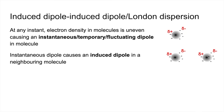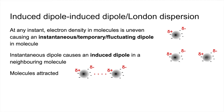If you bring in a neighboring molecule, the electron density skewed to the right will repel the electron density in that molecule over to the right, inducing a dipole in the neighboring molecule. Because you've got opposite ends of dipoles next to each other — delta plus on one next to delta minus on the other — you can have an attraction between the molecules. That's your induced dipole-induced dipole intermolecular force.